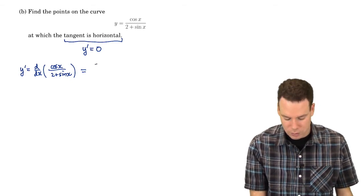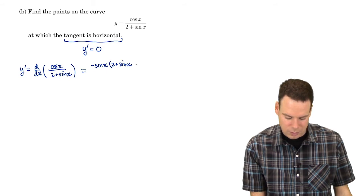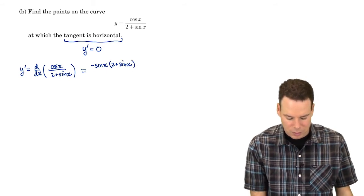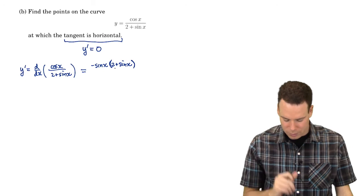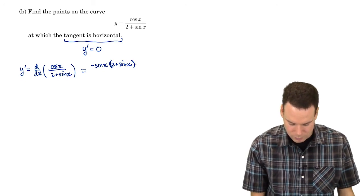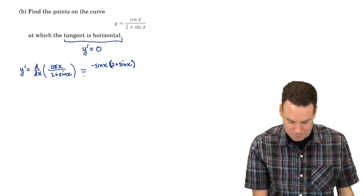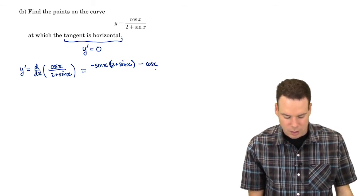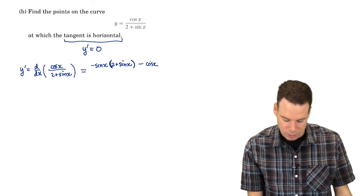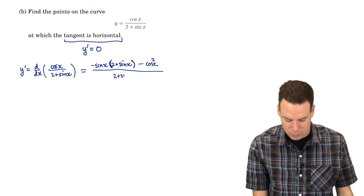It's the derivative of the top function, which is negative sine of x — derivative of cosine is negative sine of x — times the bottom function. The only functions that appear are cosine and sine, and those derivatives are right at our fingertips. The derivative of cosine should be negative sine right away. So it's the derivative of the top times the bottom, minus the top times the derivative of the bottom — derivative of sine is cosine, so there's a cosine squared there — all over the bottom squared.